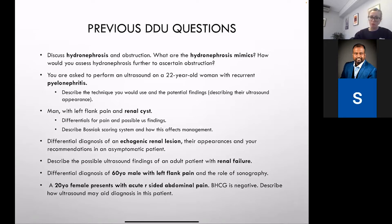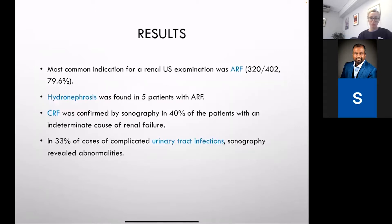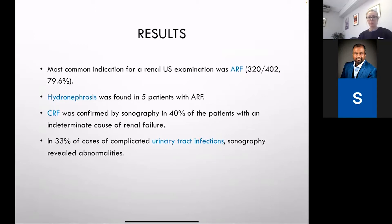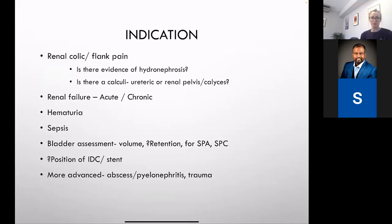There are some suggested reading books and materials at the last slide. This is one paper from 2003 on the role of renal sonography. They looked at around 400-odd patients, most with acute renal failure, and found the majority had chronic renal failures, urinary tract infections, and hydronephrosis. Those are the most common things you're going to see in an ICU setup. You can pick up the probe to look at kidneys and bladder for indications like flank pain and renal colic — wanting to know if there's hydronephrosis or post-obstructive nephropathy.